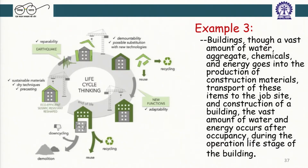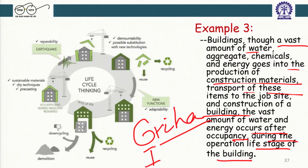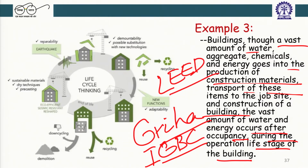For buildings, a vast amount of water, aggregate, chemicals, and energy goes into production of construction materials, transport to the job site, and construction itself. A vast amount of water and energy also occurs after occupancy during the operational life stages of the building. Life cycle thinking for buildings covers construction, usage, and recycling of old building components. Those in civil engineering and architecture will look at certifications like GRIHA, IGBC, and LEED at the global level — all of which talk about green buildings and incorporating life cycle thinking.